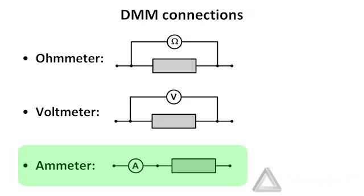Current comes in one side, goes through the DMM, which is represented by the circle with the A in it, and then passes through the circuit element. So, any current entering the DMM has to leave the DMM and then enter the circuit element whose current is being measured.